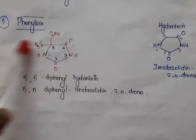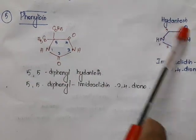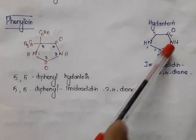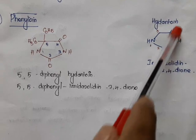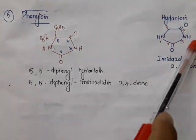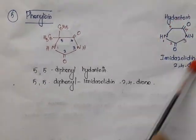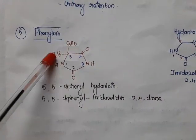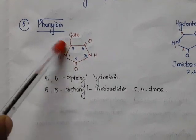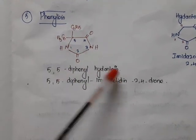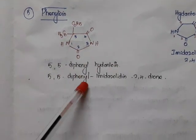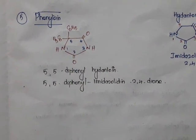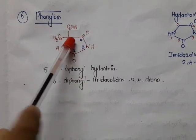The next drug is phenytoin. The nucleus present is hydantoin, which is imidazolidine with two ketone groups at positions 2 and 4, called imidazolidine-2,4-dione. Phenytoin has two phenyl groups at position 5, making it 5,5-diphenylhydantoin, or chemically 5,5-diphenylimidazolidine-2,4-dione.